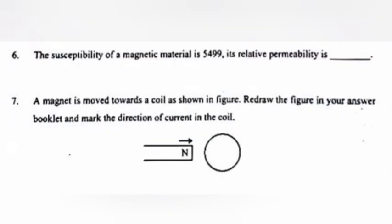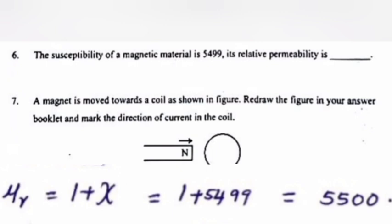Question 6: The susceptibility of a magnetic material is 5,499. Its relative permeability is? Answer: 5,500.